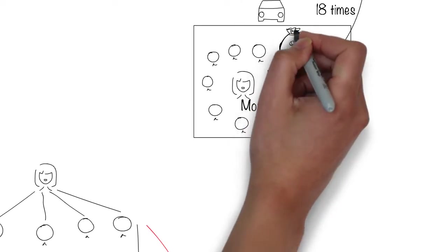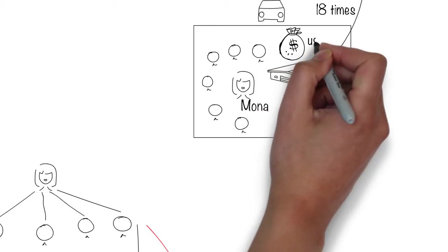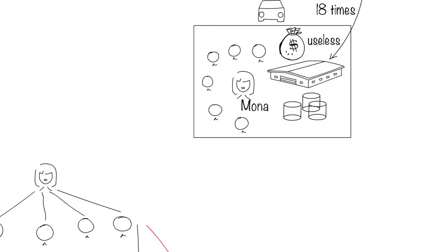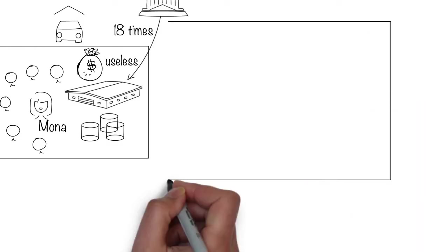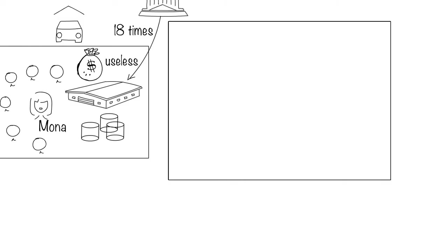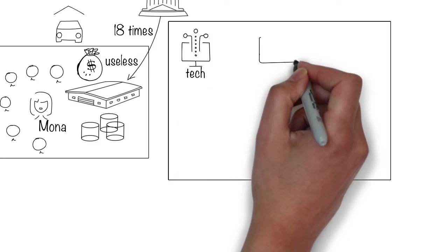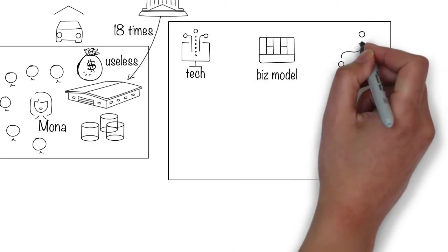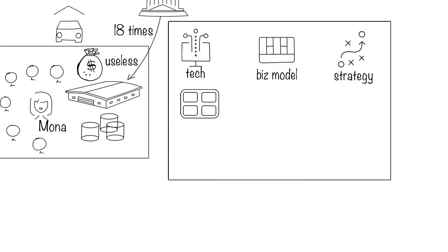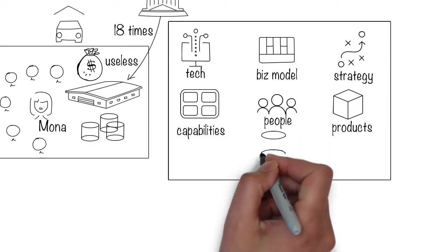All this expense to store and manage data seems useless. Digital companies of the future will be competing on a number of fronts: technology, business model, business strategy, capabilities, people, products, and data.